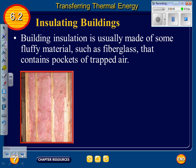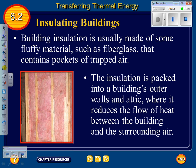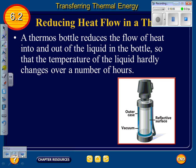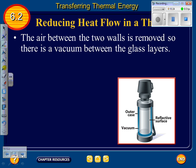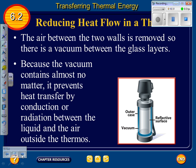Building insulation is usually made of fluffy materials such as fiberglass that contain pockets of trapped air. The insulation is packed into a building's outer walls and attic, where it reduces the flow of heat between the building and the surrounding air. A thermos bottle reduces the flow of heat into and out of the liquid inside so that the temperature of the liquid hardly changes over hours. To do this, a thermos bottle has two glass walls. The air between the two walls is removed, creating a vacuum. Because the vacuum contains almost no matter, it prevents heat transfer by conduction or convection.